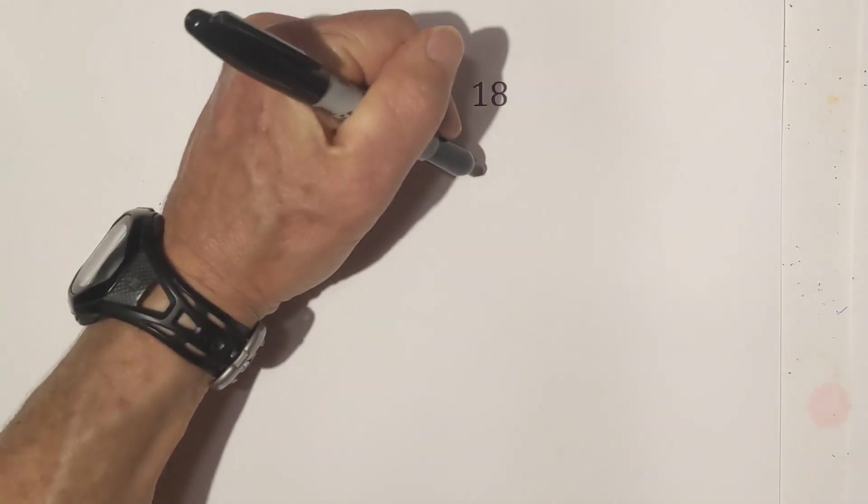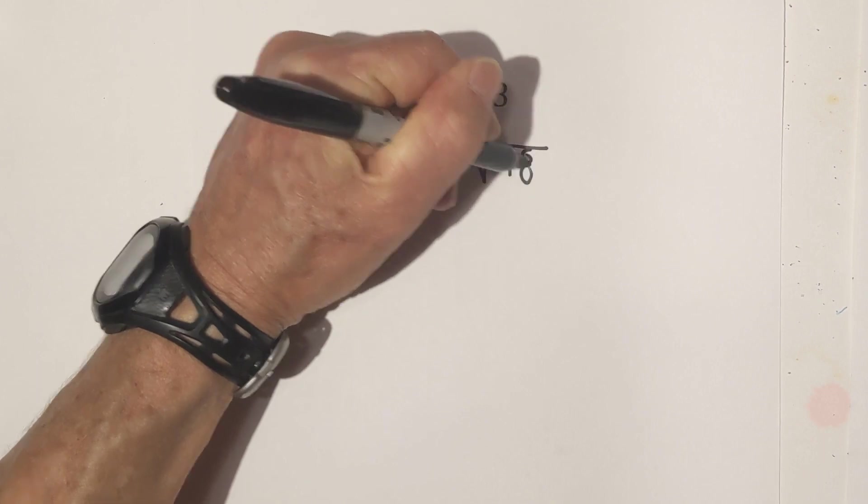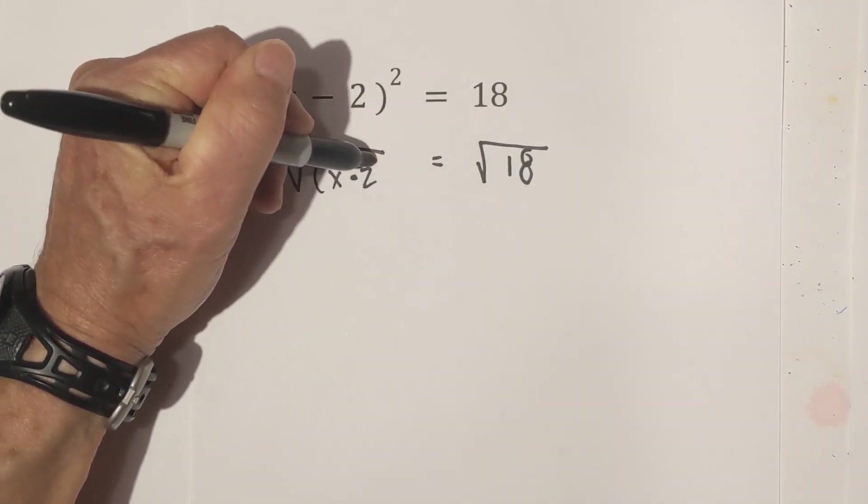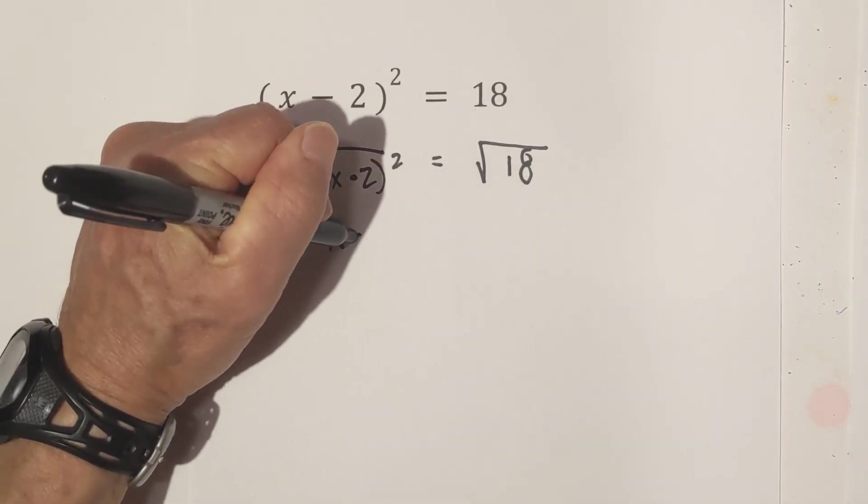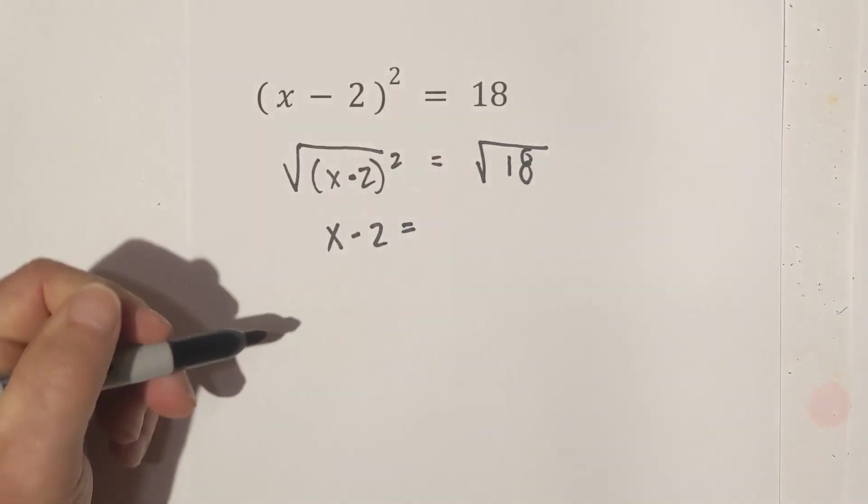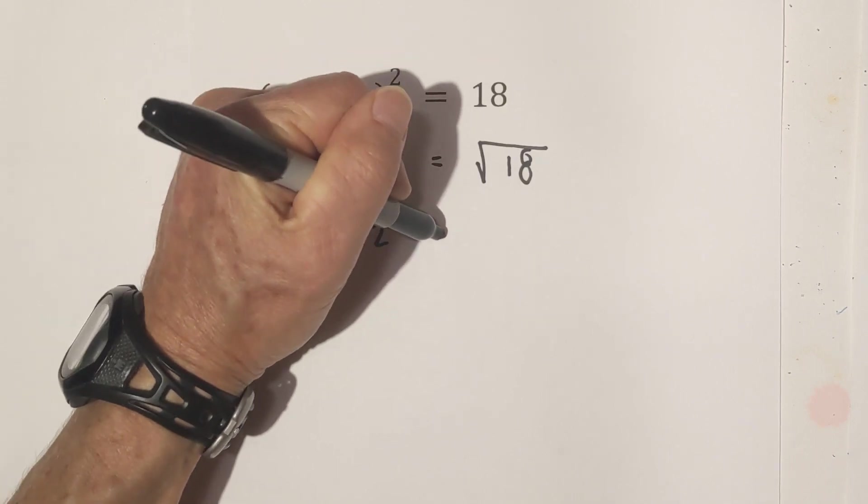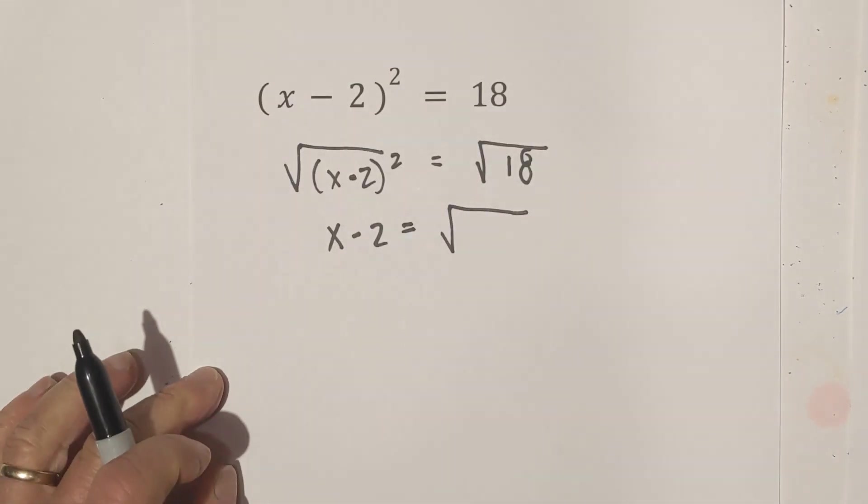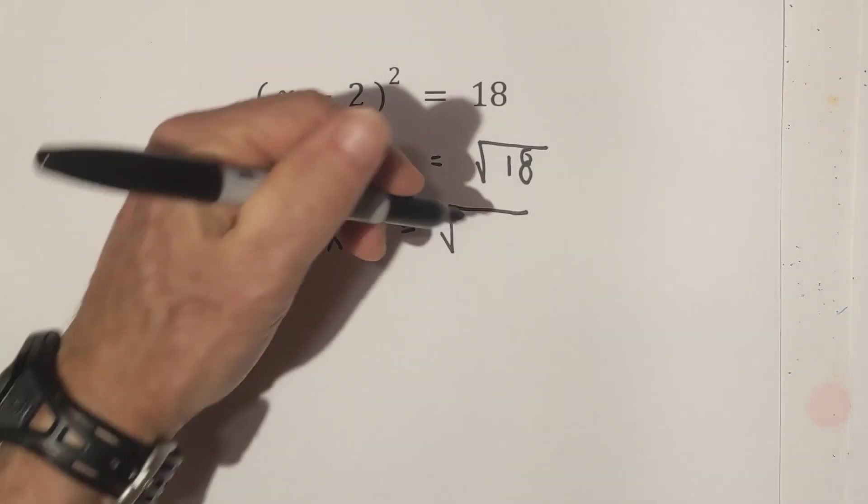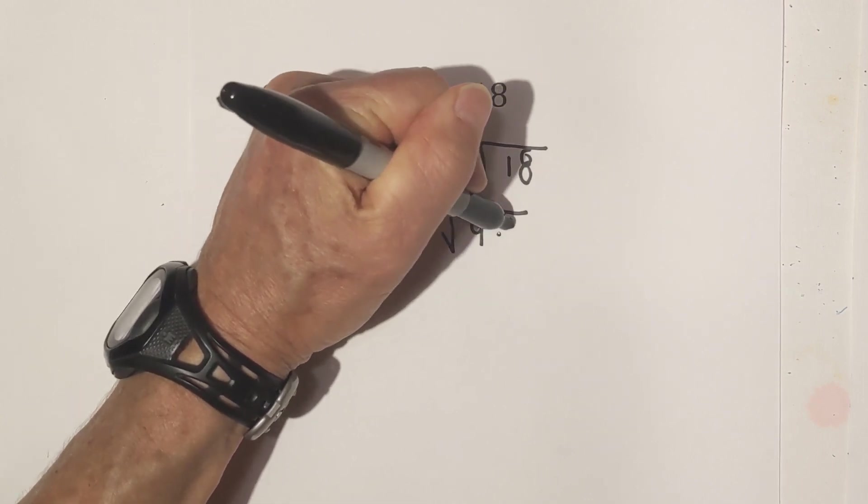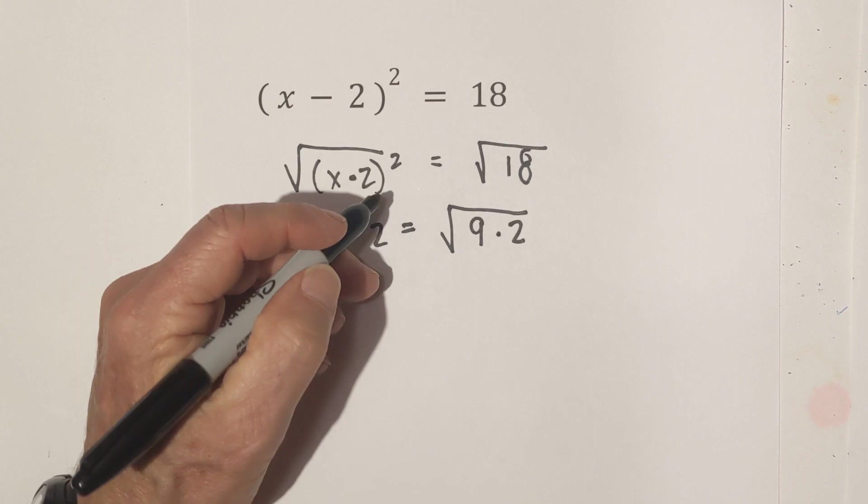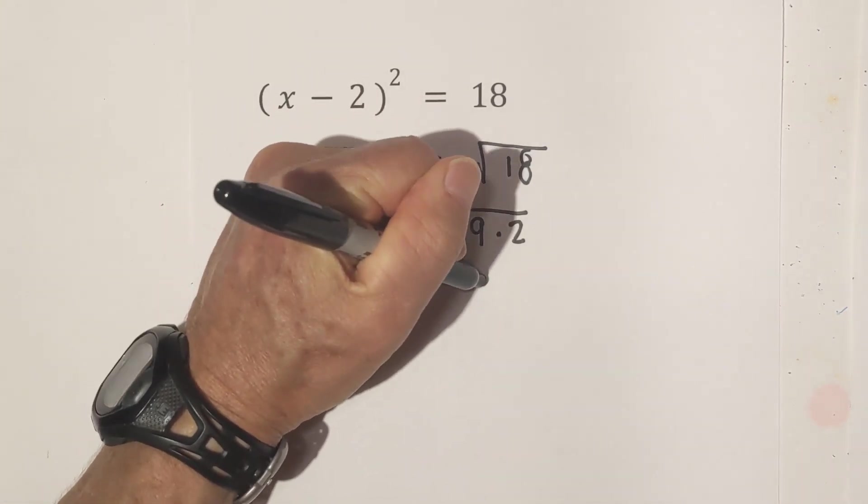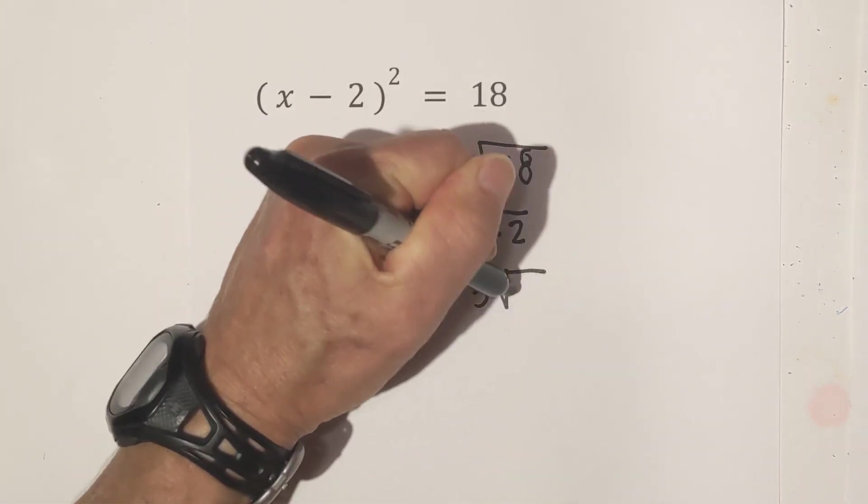And so we're going to take the square root of both sides. So we have x minus 2 squared. The square root of this will be x minus 2 equals. Now let's see what we can do with this square root. We can take some numbers out. 9 times 2 equals 18. The 9 is a perfect square. So I can take a 3 out.